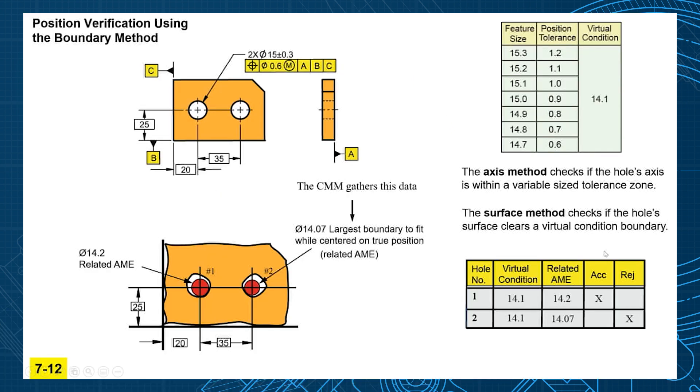So if we compare these two methods, what we learned in unit 5 is what we call in the standard the axis method. The axis method checks to see if the hole's axis is within this variable size tolerance zone. The tolerance zone is increasing as the size of the hole increases because of that bonus tolerance.